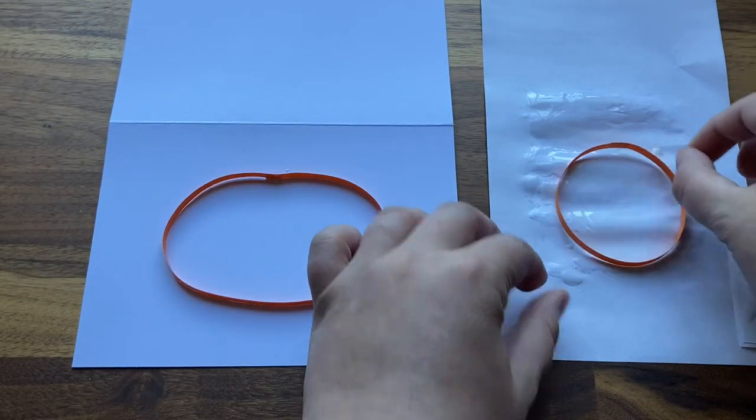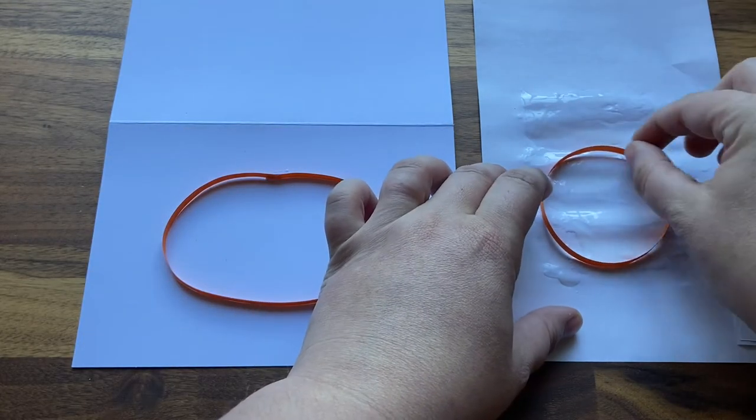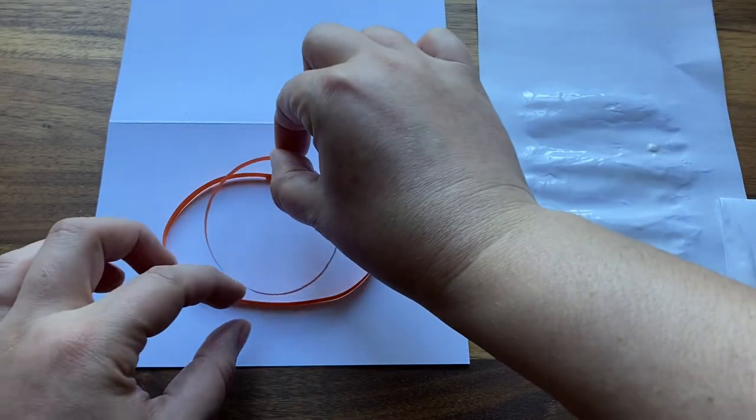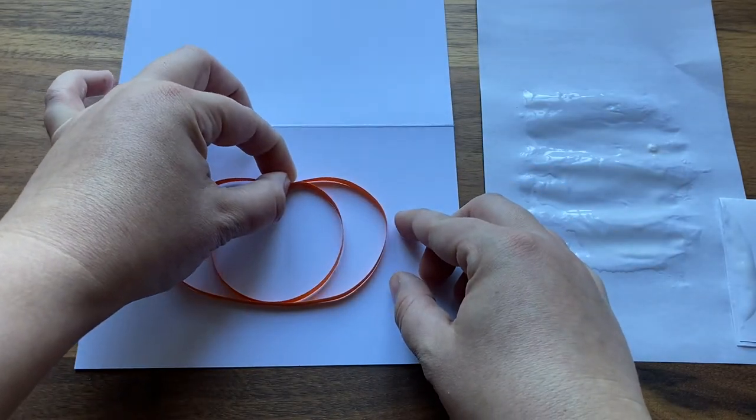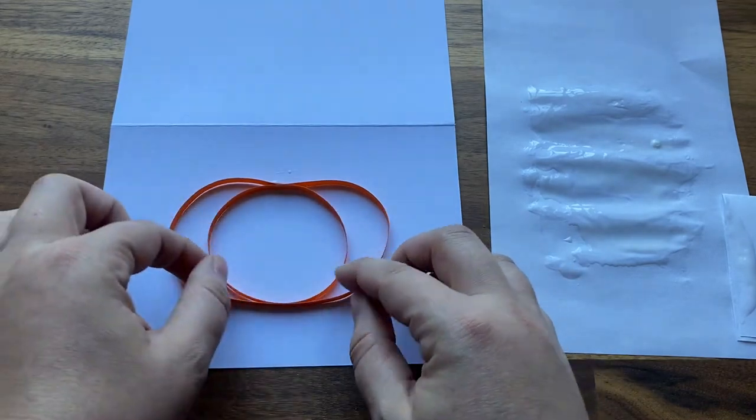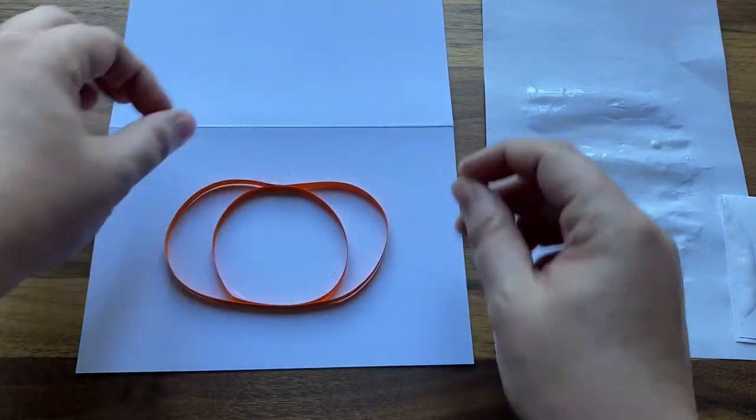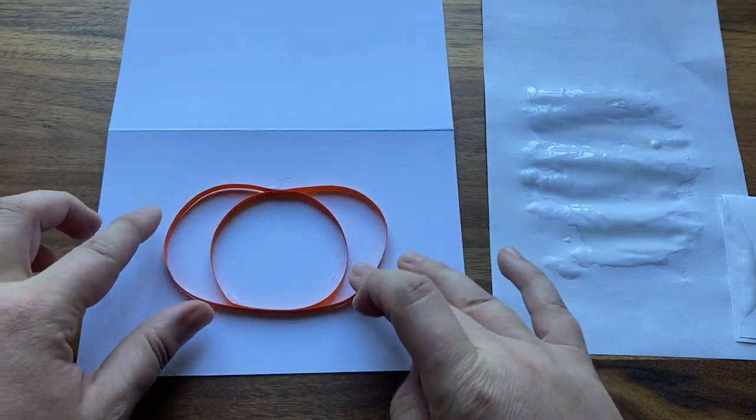Now repeat the same process with the smaller circle. You'll want to work fairly quickly for this part, adjusting the shapes as you go. You'll notice that I'm making a small dip in the top part of my pumpkin where the stem is going to go.